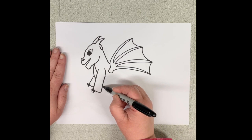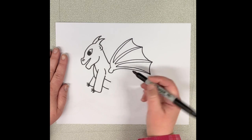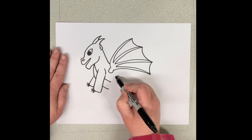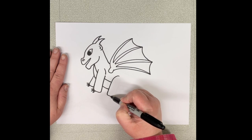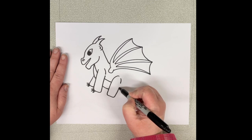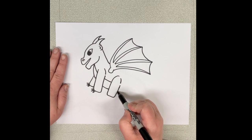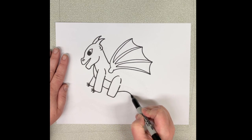Then we're going to follow where our line would have gone down for the stomach. And we're going to add the back leg. And then we keep doing his tummy.